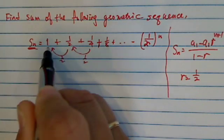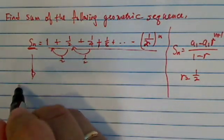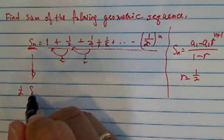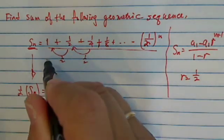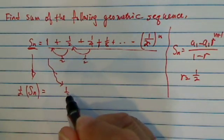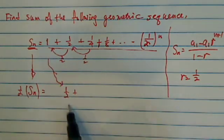If we call this Sn as the sum of this whole thing. Now watch the magic happen. If I times 1/2 to this original Sn, then each one of the terms gets shifted. So 1/2 times 1 becomes 1/2.